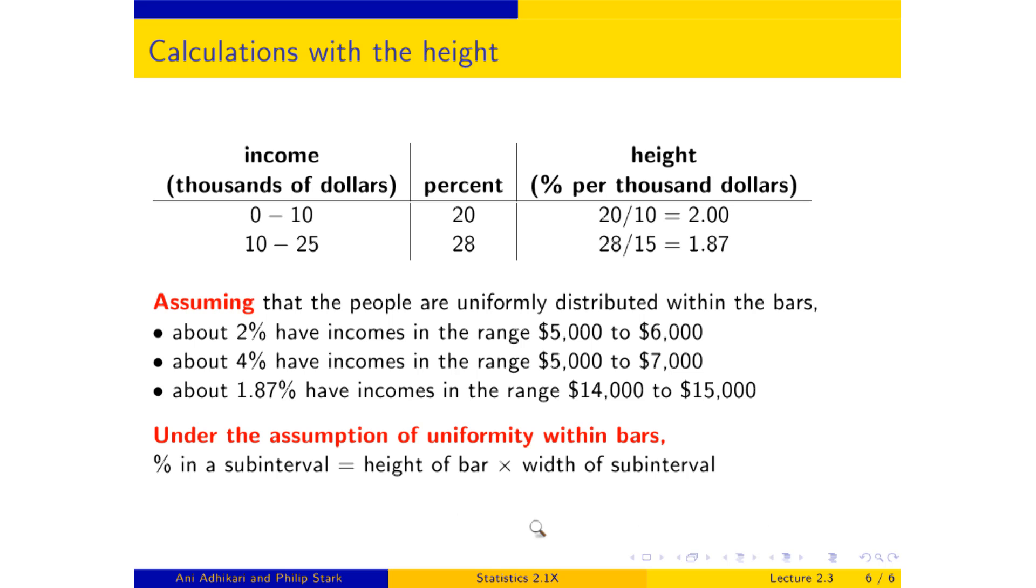And to summarize, if you assume uniformity within bars, which may or may not be a good assumption, then you can figure out the percent in subintervals. The percent in a subinterval is the height of the bar times the width of the subinterval. Now, that's really not rocket science. The percent is an area. It's the area of a rectangle, and so its area is the height of the rectangle times the width of the rectangle. No big surprise. In the next section, we'll use this calculation to estimate what are known as percentiles of the data.